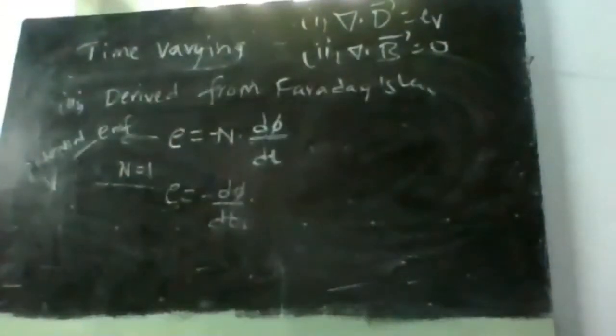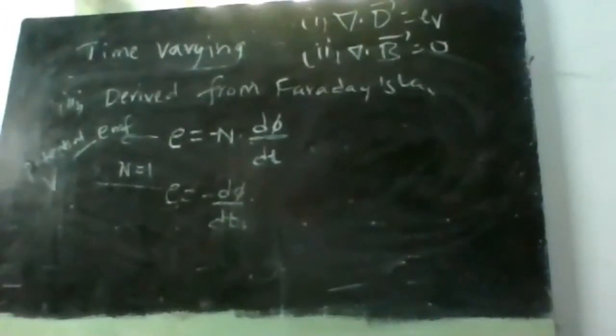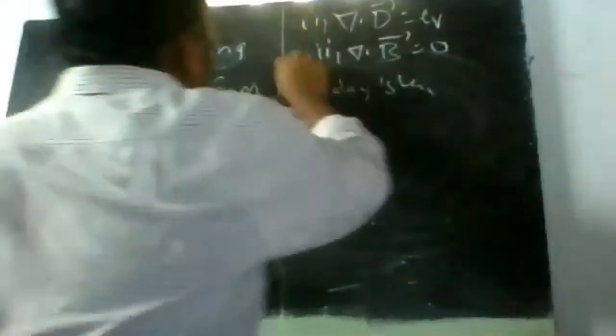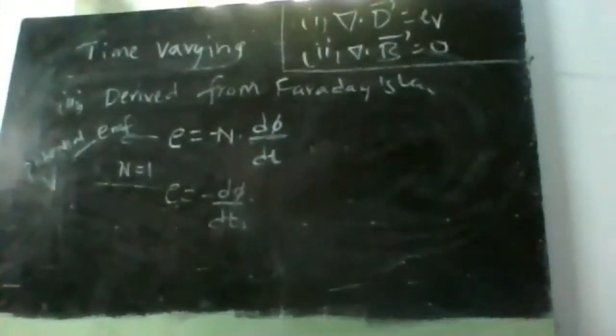The second equation: because a magnetic field is always closed, del·B̄ = 0. This also doesn't change for time-varying fields. So these two equations from the static fields do not change or vary.